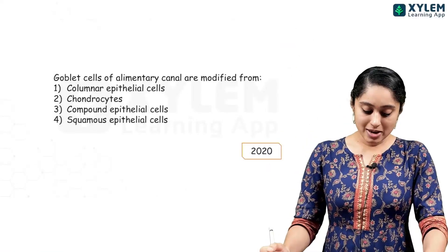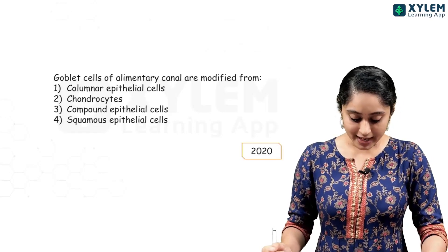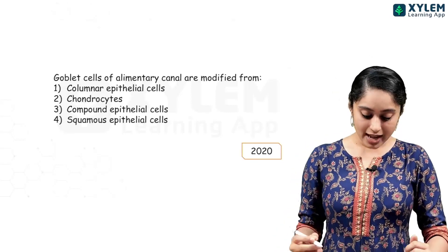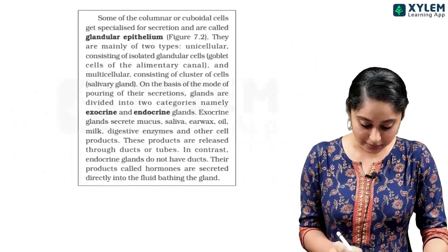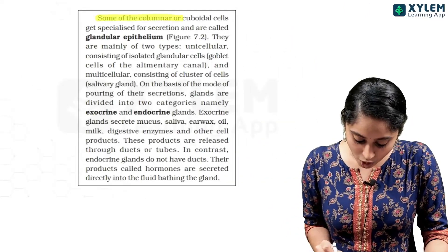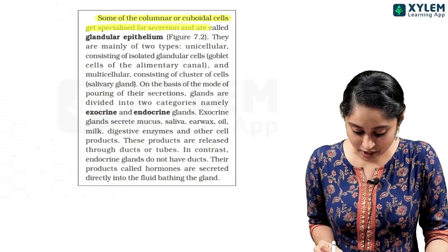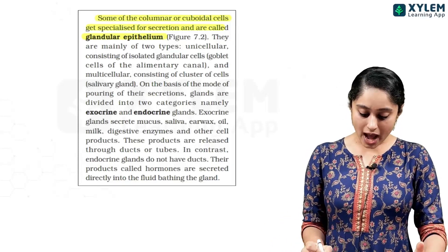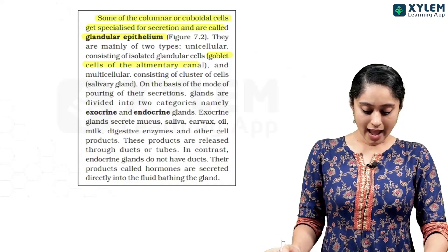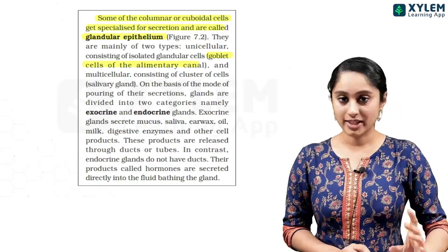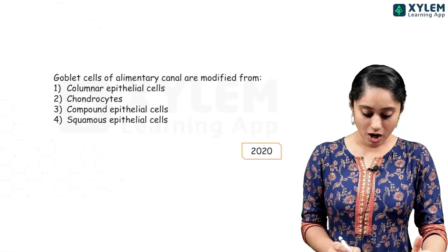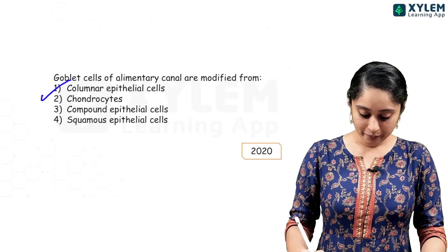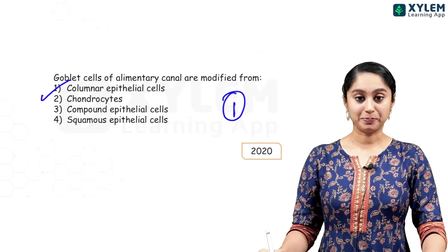A 2020 question: goblet cells of the alimentary canal are modified forms of which cells? Some columnar or cuboidal cells get specialized to perform secretions and are called glandular epithelium. Goblet cells are one type of glandular epithelium. So columnar or cuboidal cells are the answer — option 1 will be the right answer.